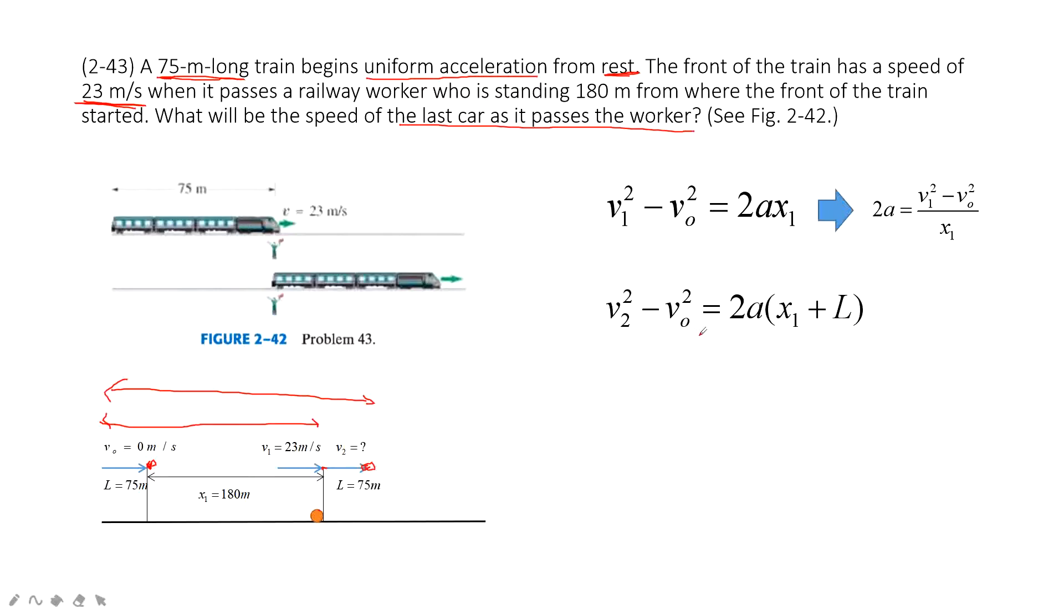So v2 minus v0 is this one. And then we can put this 2a. In this case, there is a small trick to solve the problem, to make it simpler. So we can just do the calculation in these letters and finally input the data. So we can get 2a in these terms, and then we put this term inside.